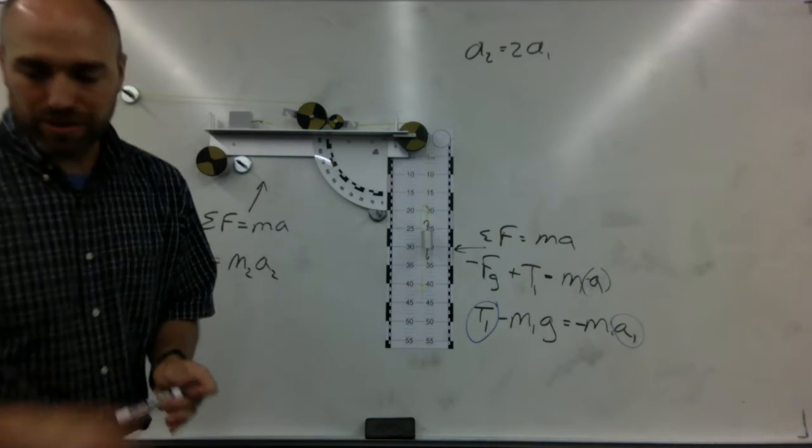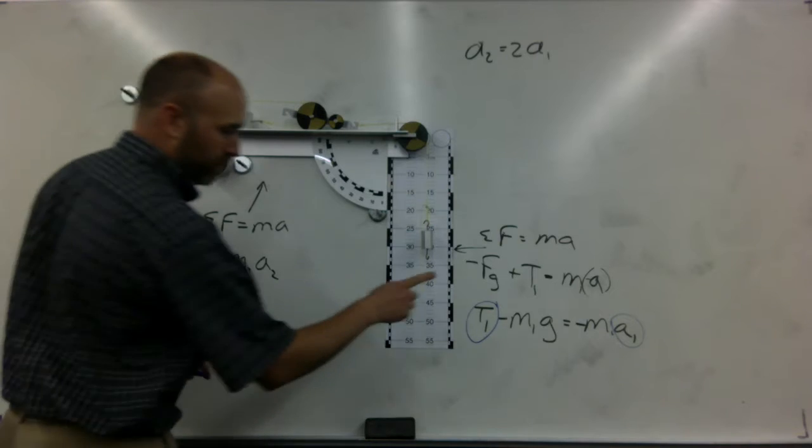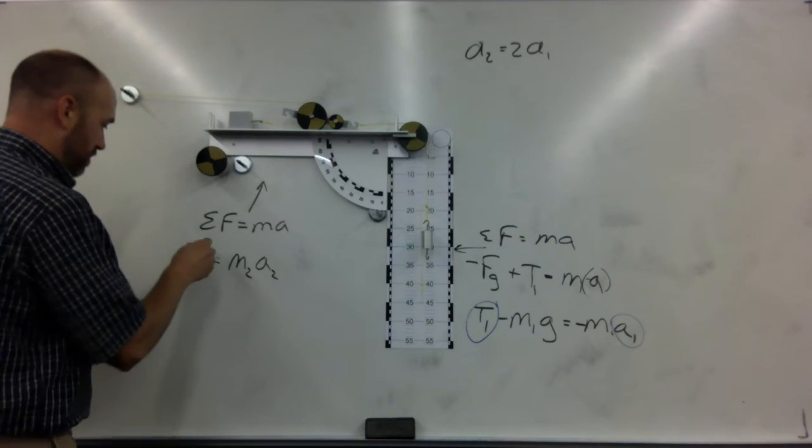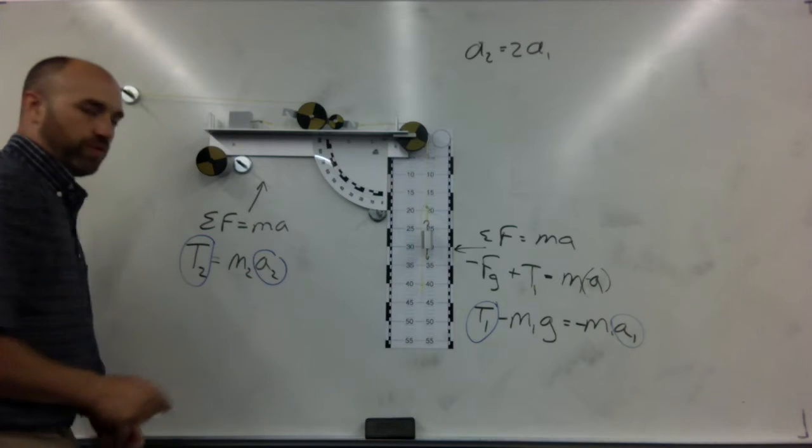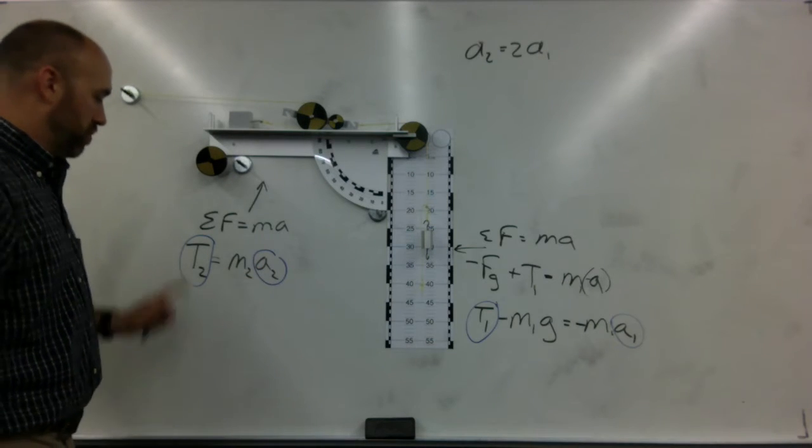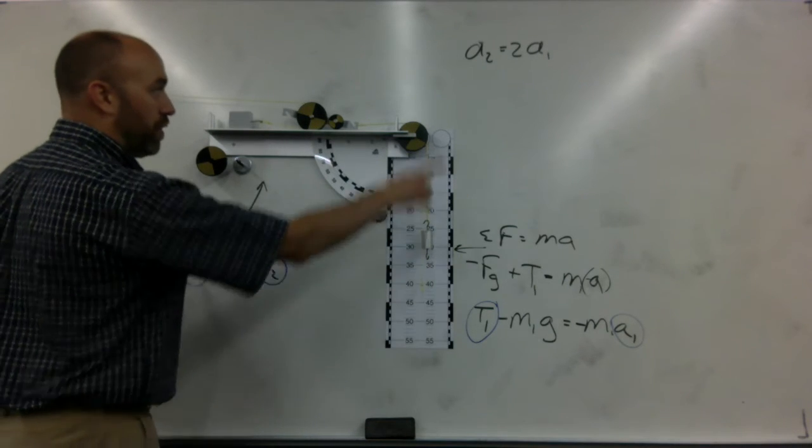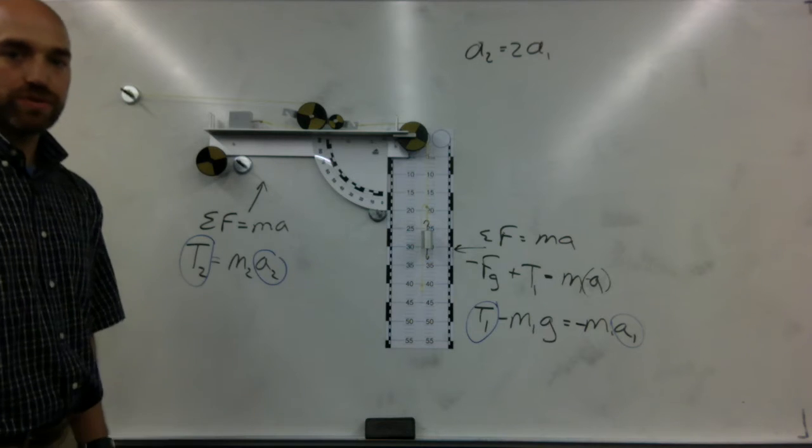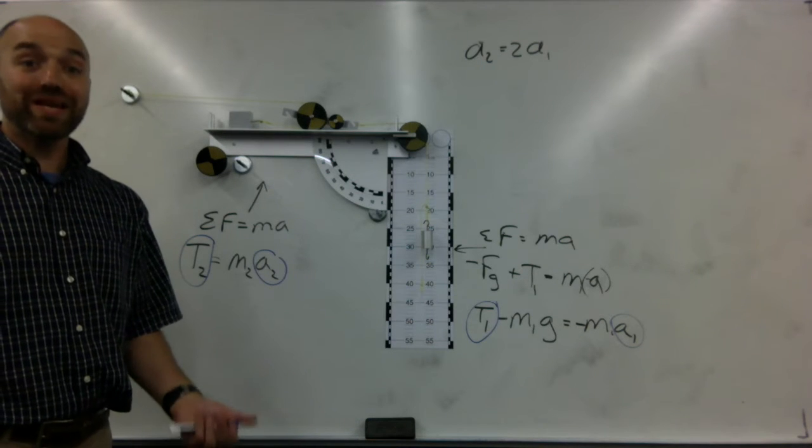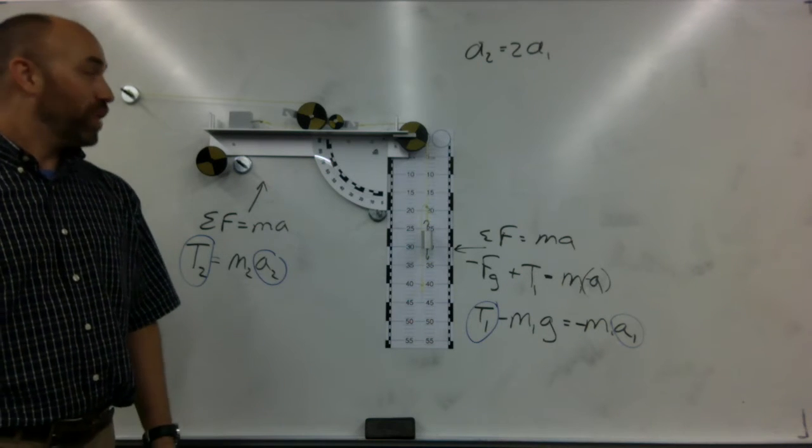So we're looking at this, and I'm saying, how many unknowns do we have? One, two, three, four unknowns. One, two, three equations. Oh no, we need another equation. Where are we going to get it?